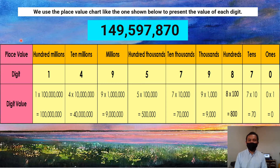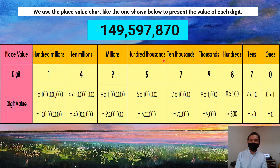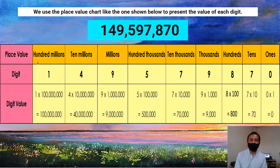The place values are ones, tens, hundreds, thousands, ten thousands, hundred thousands, millions, ten millions, and hundred millions.